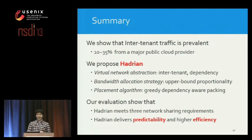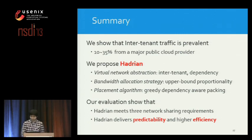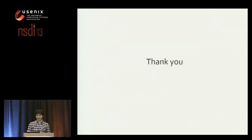To summarize, we observed that inter-tenant traffic is prevalent in today's data centers. We propose Hadrian as a network sharing solution for multi-tenant data centers, consisting of three major components: virtual network abstraction, host-compliant bandwidth allocation, and placement algorithm. Our evaluation shows that Hadrian meets all three network sharing requirements, leading to predictability and more efficiency. Thank you.